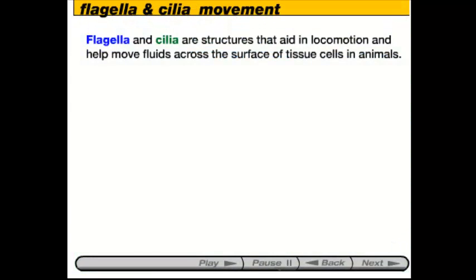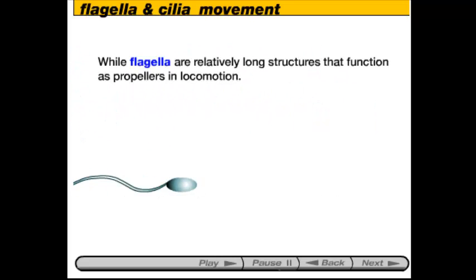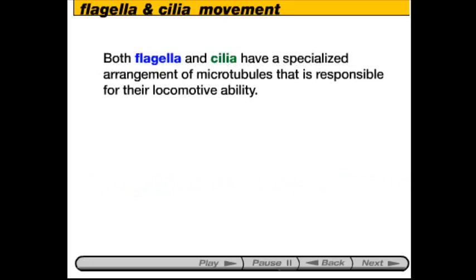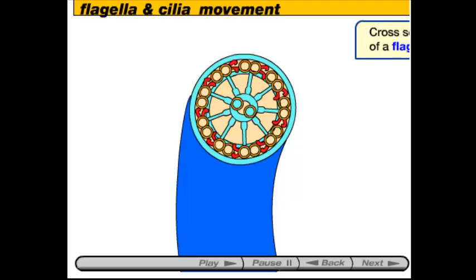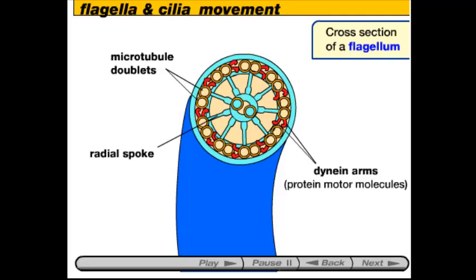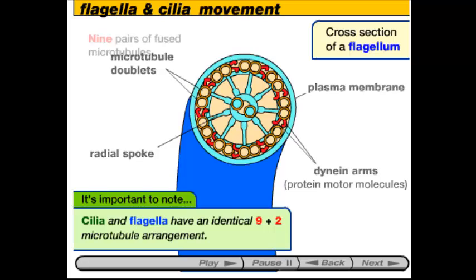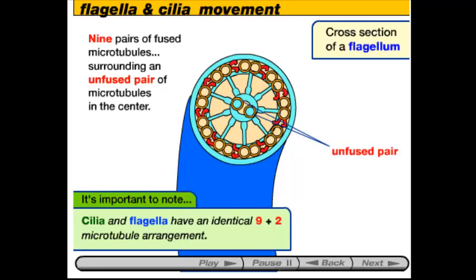Flagella and cilia are structures that aid in locomotion and help move fluids across the surface of tissues in animal cells. Cilia are relatively short and work like oars, where flagella are relatively long and function like propellers in locomotion. Both cilia and flagella have a specialized arrangement of microtubules responsible for their locomotive ability. Here we'll cross-section the flagellum of a sperm and look at that arrangement: microtubule doublets, dynein arms, and radial spoke proteins hold it all together, projected from the cell and covered by the plasma membrane. Cilia and flagella have the identical 9+2 microtubule arrangement — nine pairs of fused microtubules surrounding an unfused pair of microtubules in the center.